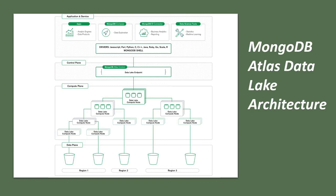This is the MongoDB Atlas Data Lake architecture. The S3 nodes in the AWS S3 bucket return data to the Data Lake compute nodes. This section is within the MongoDB Atlas control plane. There is an endpoint that connects MongoDB Atlas to AWS. Once set up, you can connect to any kind of application — MongoDB Compass, MongoDB Shell, any BI connectors like Power BI or Qlik, and also data science tools such as Python for machine learning and statistics.